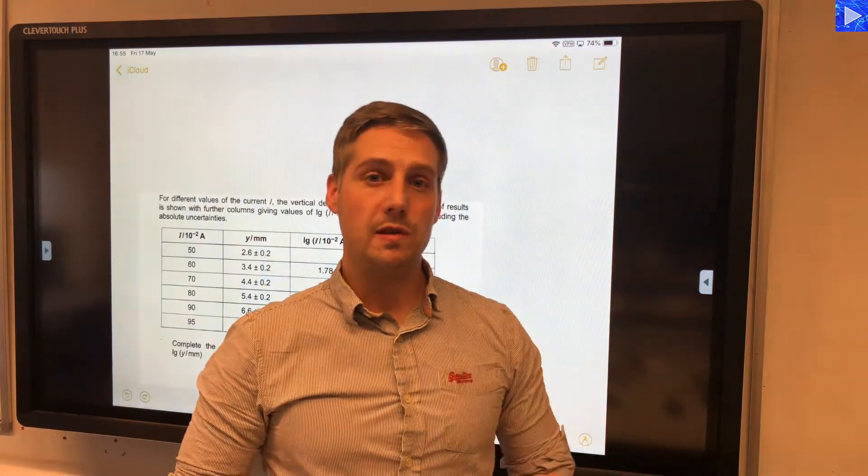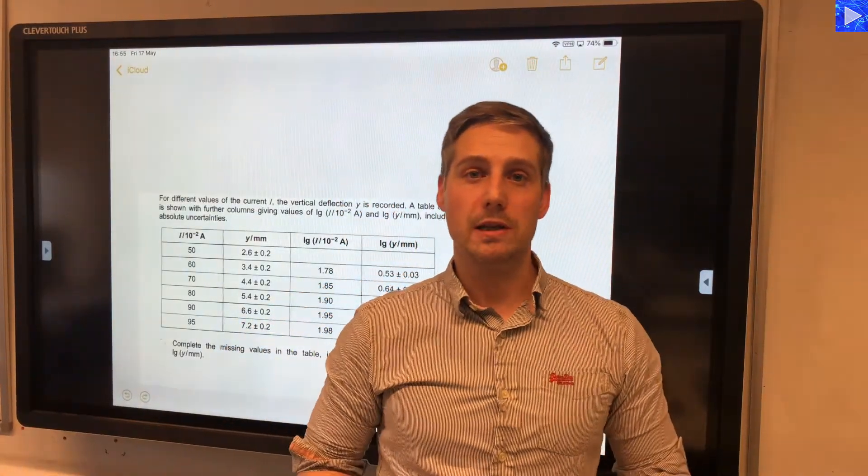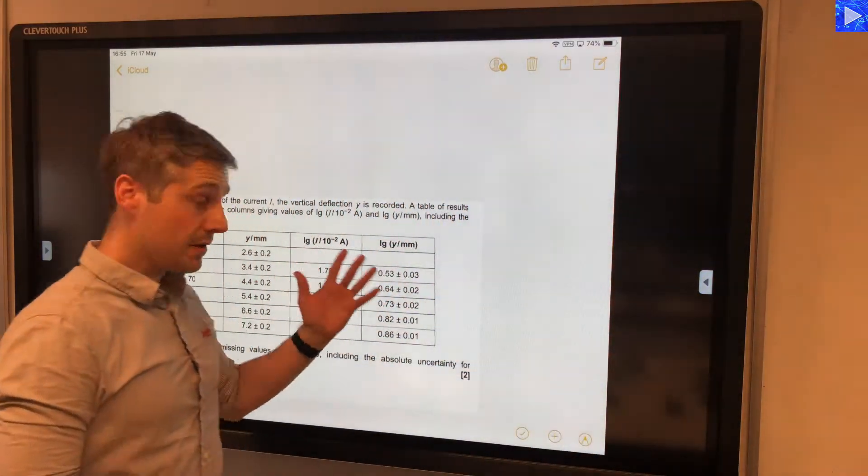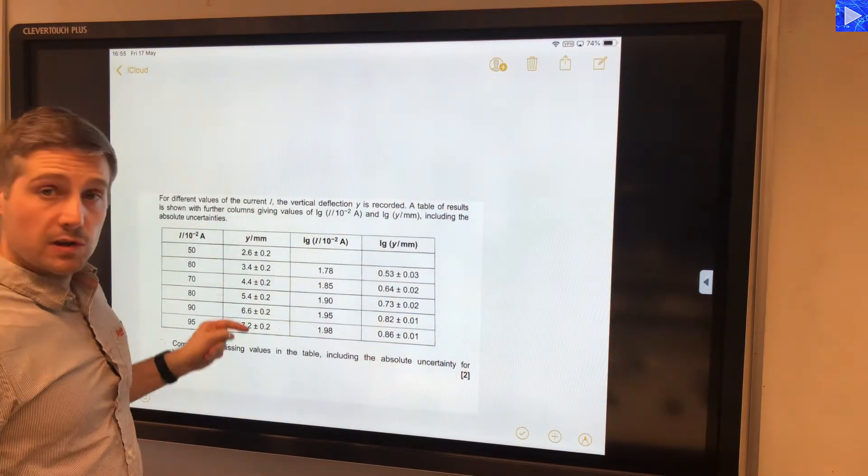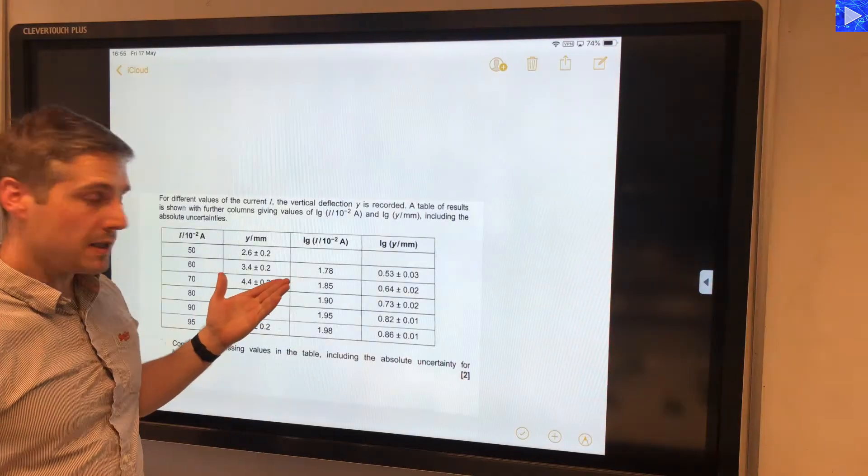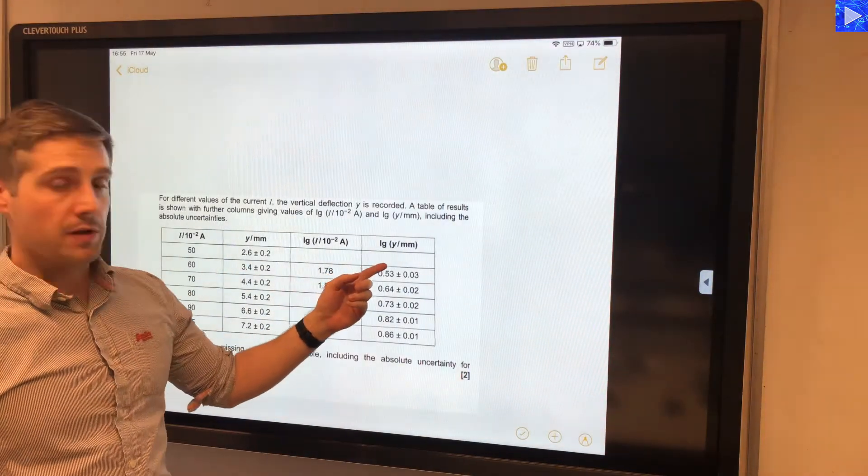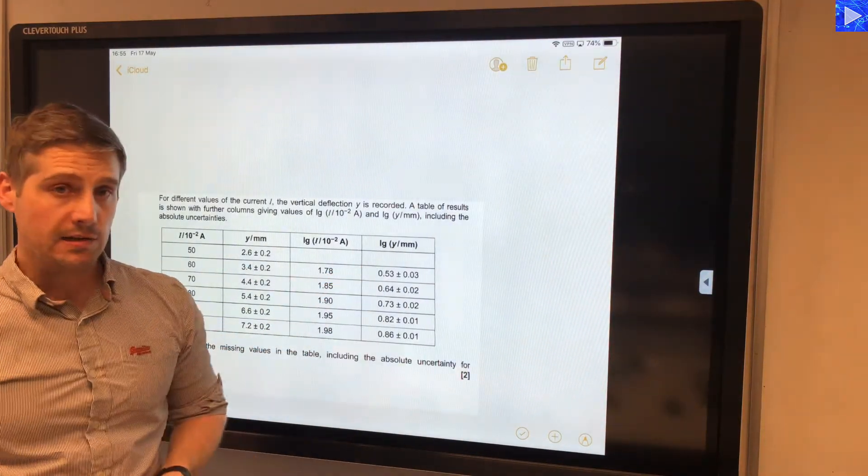Hi, I'm going to show you how to determine the absolute uncertainty in log values. For example, we've got a table of data with some vertical deflections measured in millimeters, and we've taken a log of those for some subsequent analysis.